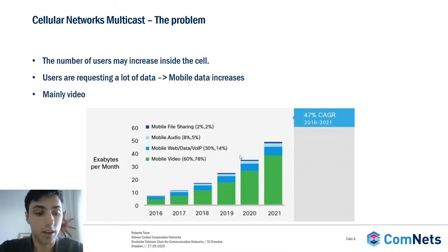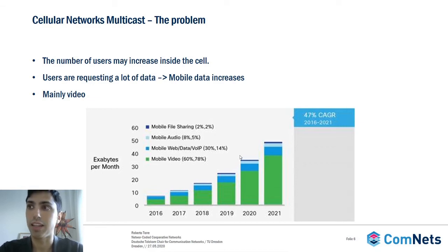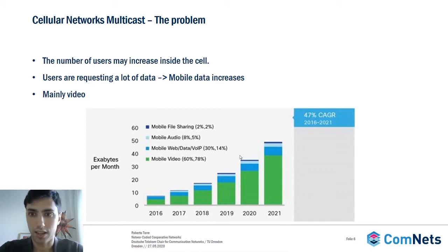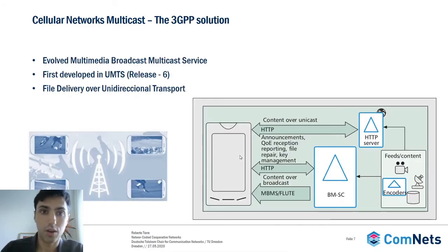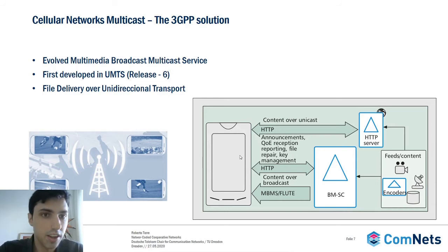What does this mean? The problem with cellular networks right now is that they are tackling a scenario with a massive amount of devices generating massive traffic due to video. So is there a way to reduce this traffic while keeping or increasing throughput? A solution was generated by the 3GPP group: they created the Evolved Multimedia Broadcast Multicast Service, or eMBMS, which was first developed in UMTS in 3G and works similarly to HTTP, where a user requests files from a server and the server answers with the content.